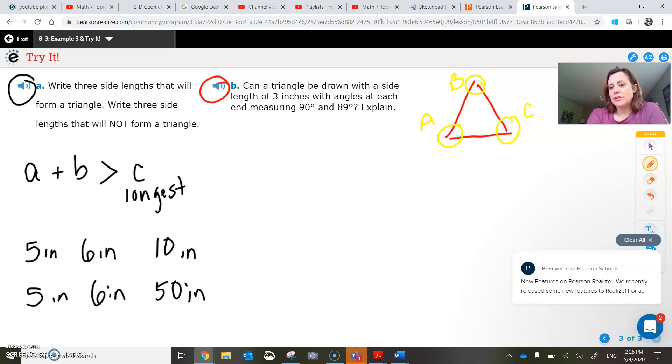If you add those up, you will always get exactly 180 degrees. The measure of angle A plus the measure of angle B plus the measure of angle C has to be exactly 180 degrees.